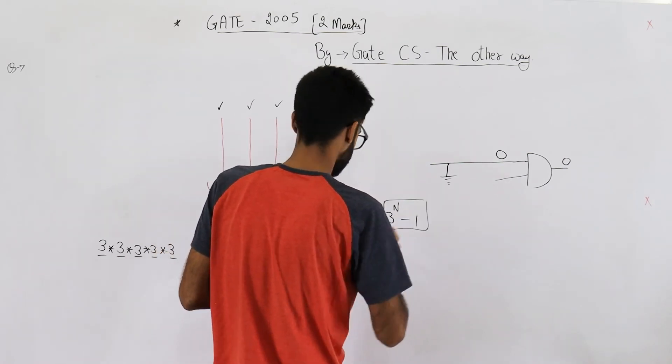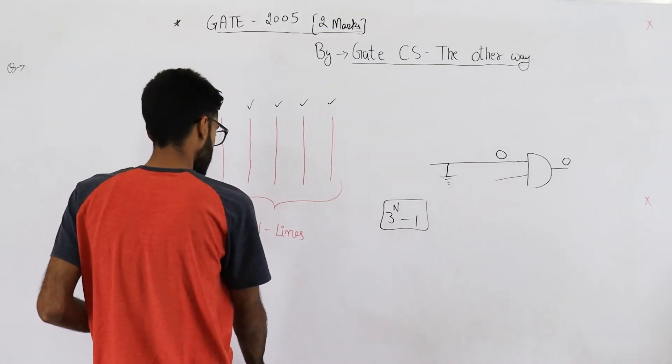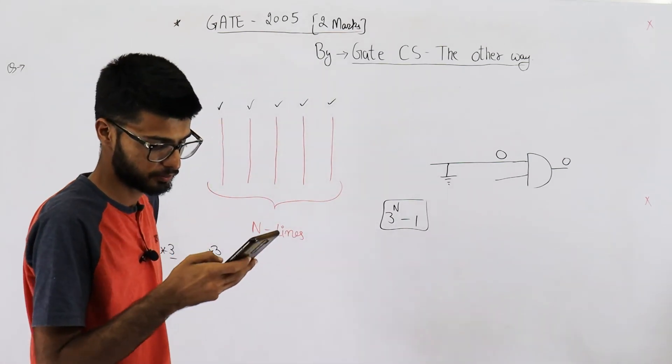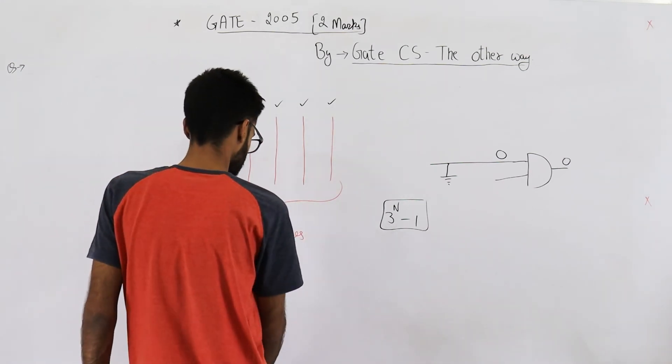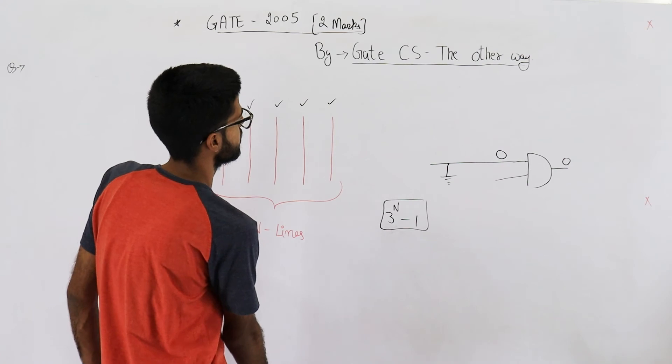This is your answer: 3^N minus 1. It is option number B. Option B, yeah. Okay, thank you very much for watching this video.